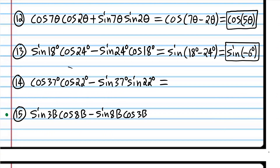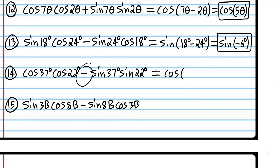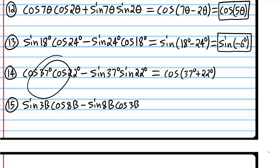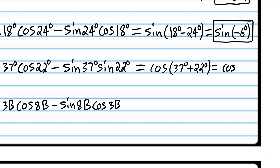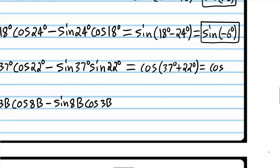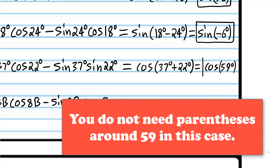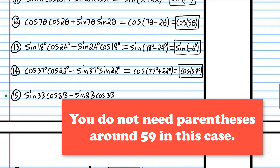Let's try one more before you try one on your own. We have a product of cosines and a product of sines, and we have a subtraction symbol — which means we're actually going to add the angles. Remember: with the cosine function the signs are opposite, so if you subtract here you add there. We get cosine(59°). As you can see, this is very easy. The primary purpose of this is to show you how these formulas work — you're not only memorizing them but learning how they work.